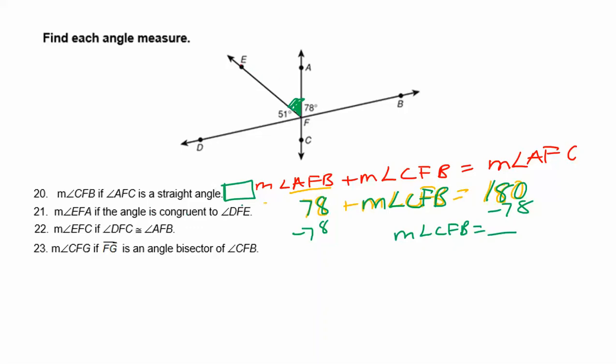is congruent to DFE. DFE is marked 51. They're saying if these are the same, what's the green angle? Well, if they're congruent, they're already telling you the answer. If they're congruent, they're the same, and they're giving you the measure of angle DFE, so you just write the same thing.